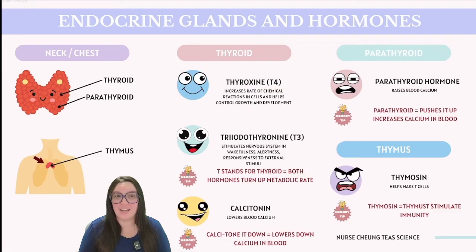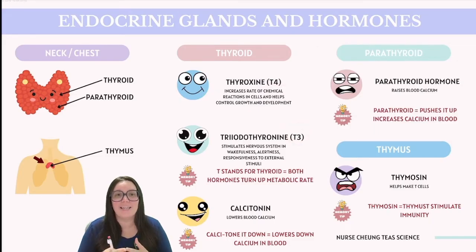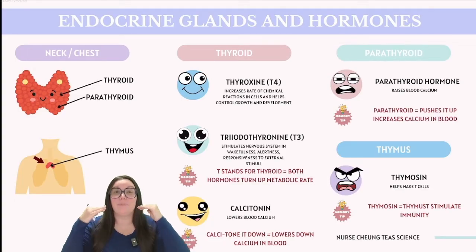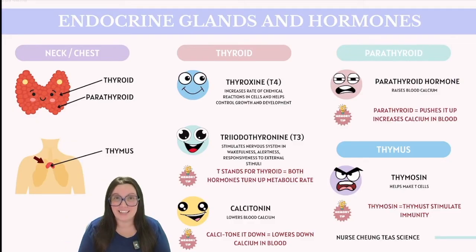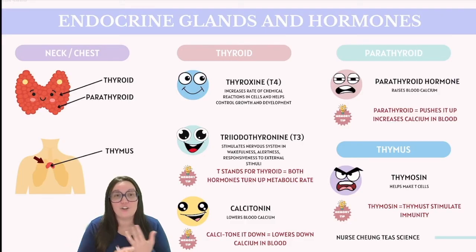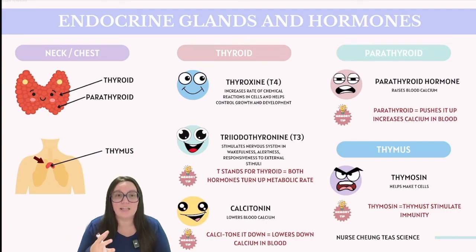Next up we have the thyroid gland, which is that butterfly-shaped gland that nestles beneath the larynx and encircles the trachea in the front. This gland produces T4 and T3 hormones, which are pivotal in regulating metabolic processes. Additionally, the thyroid gland secretes calcitonin, a hormone that helps reduce our blood calcium levels. The parathyroid gland is located at the posterior position relative to the thyroid gland, and it secretes parathyroid hormone, which plays a critical role in increasing our blood calcium levels. Calcium is vital for nerve transmission, muscle function including the heart, blood clotting, and regulating enzyme activity and hormone secretion.